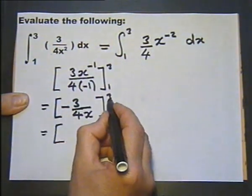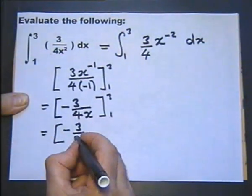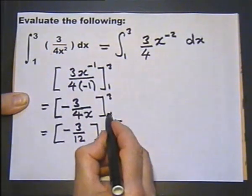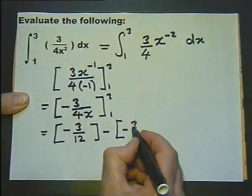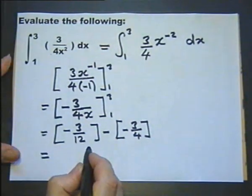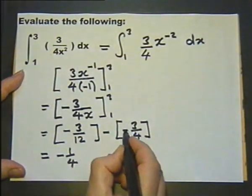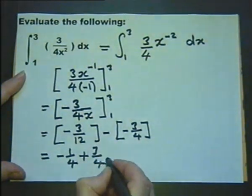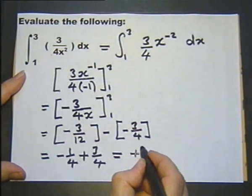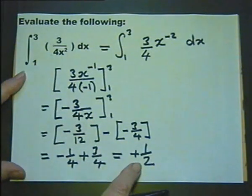We're then substituting the upper limit, so it's 3 over 4 times 4 times 3, which is minus 3, minus substituting the lower limit, so it's 3 over 4 times 1. Now this will cancel to a quarter, so that's minus a quarter minus minus three quarters, which makes plus three quarters, so the answer is plus a half. That definite integral works out to be plus a half.